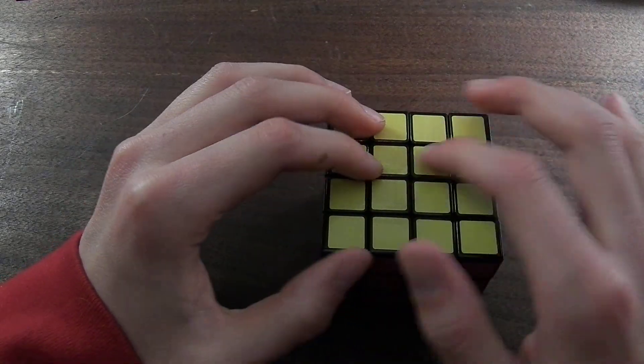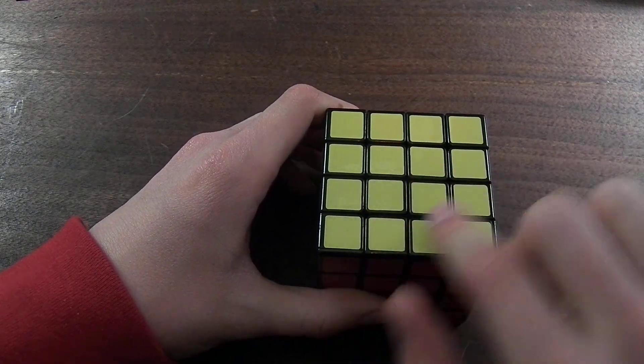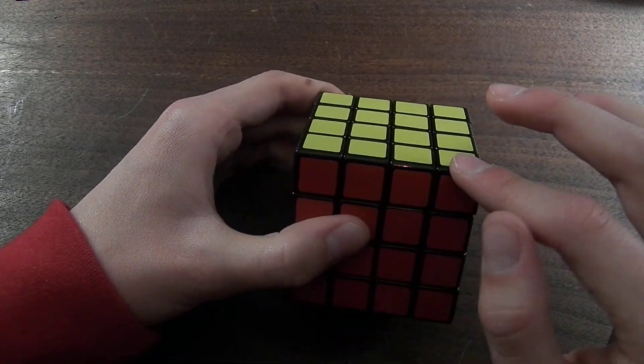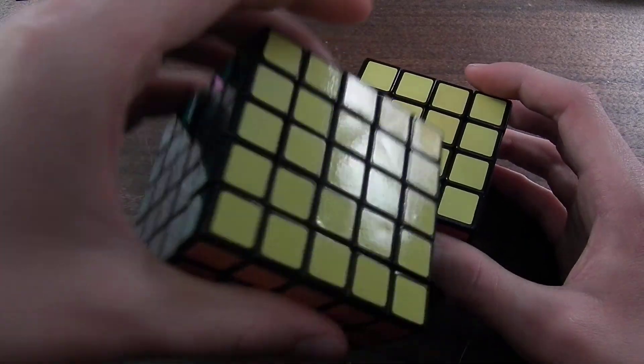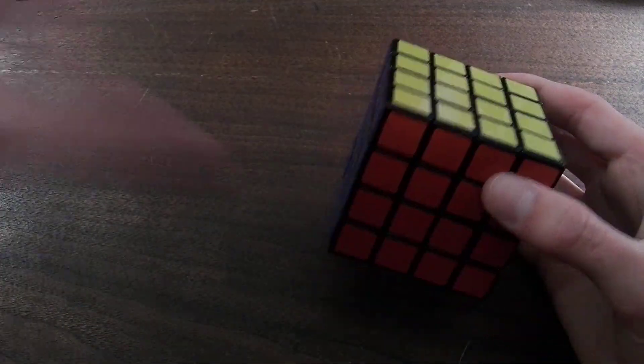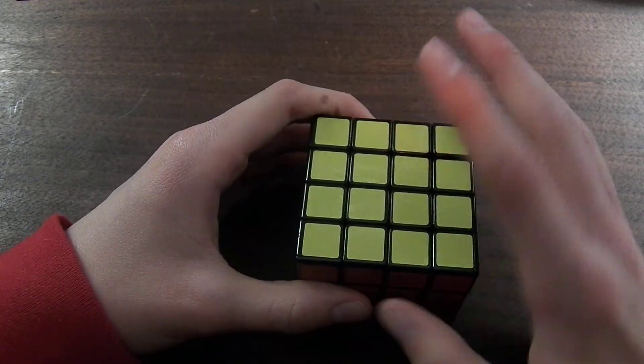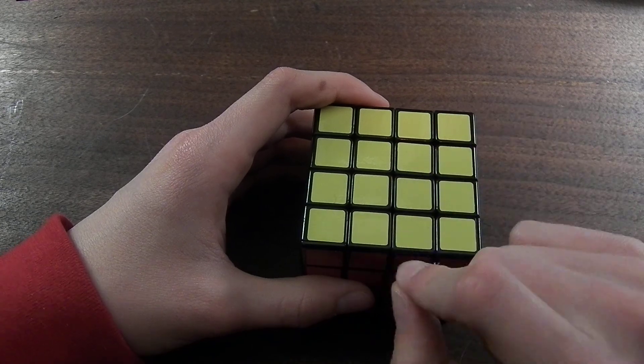I'm going to put all the algorithms I teach you here in the description below. One more thing, a lot more parity happens on even sided cubes than on odd sided cubes like 5x5. 5x5 has, I think, I've only seen one parity case on it. 4x4 has 5 parity cases. So that was one of the parity cases, it was edge parity.